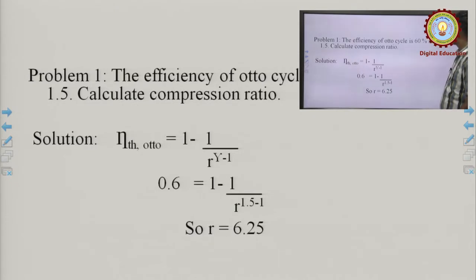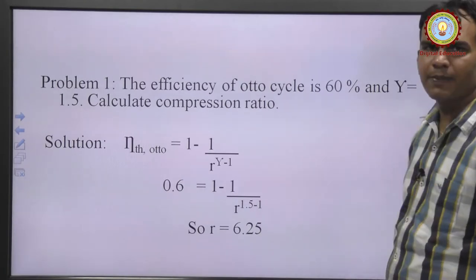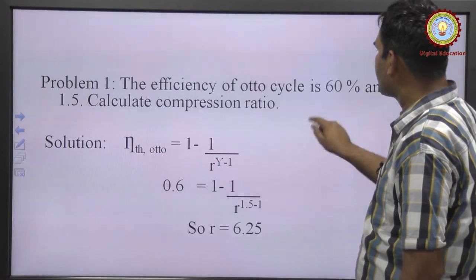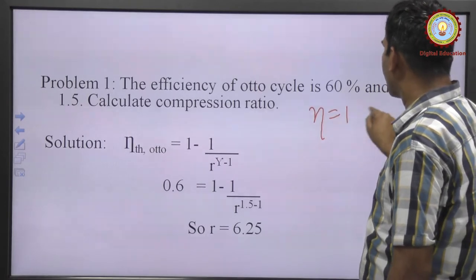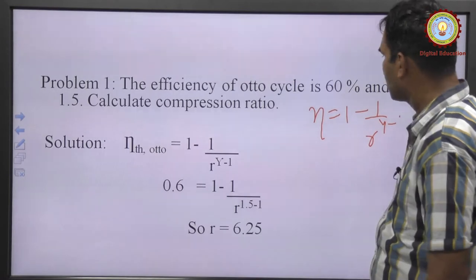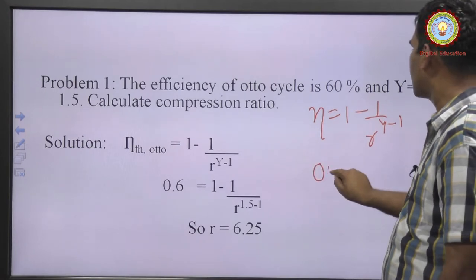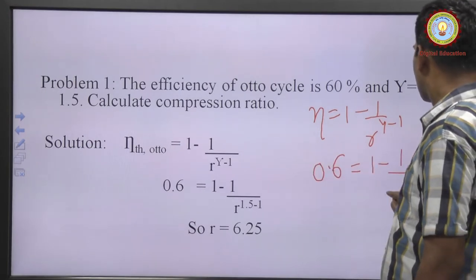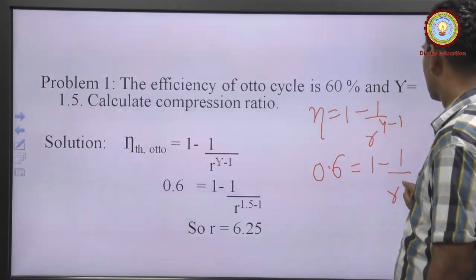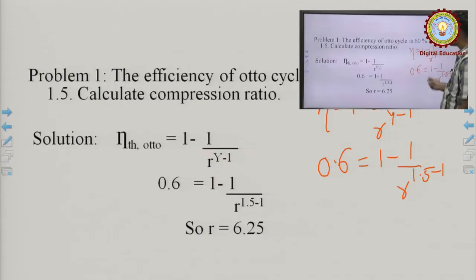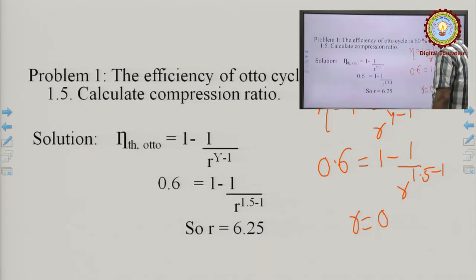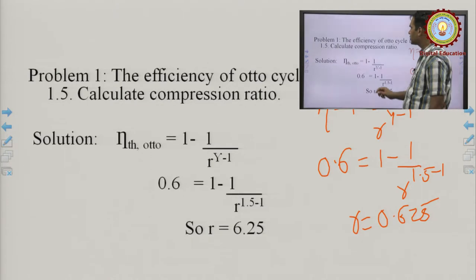Example 1: The efficiency of an Otto cycle is 60% and the ratio of specific heats γ = 1.5. Calculate the compression ratio. Using η = 1 − 1/r^(γ−1) with η = 0.6 and γ = 1.5, the compression ratio r comes out to be 4 (approximately 0.625 in intermediate steps leading to r = 4).